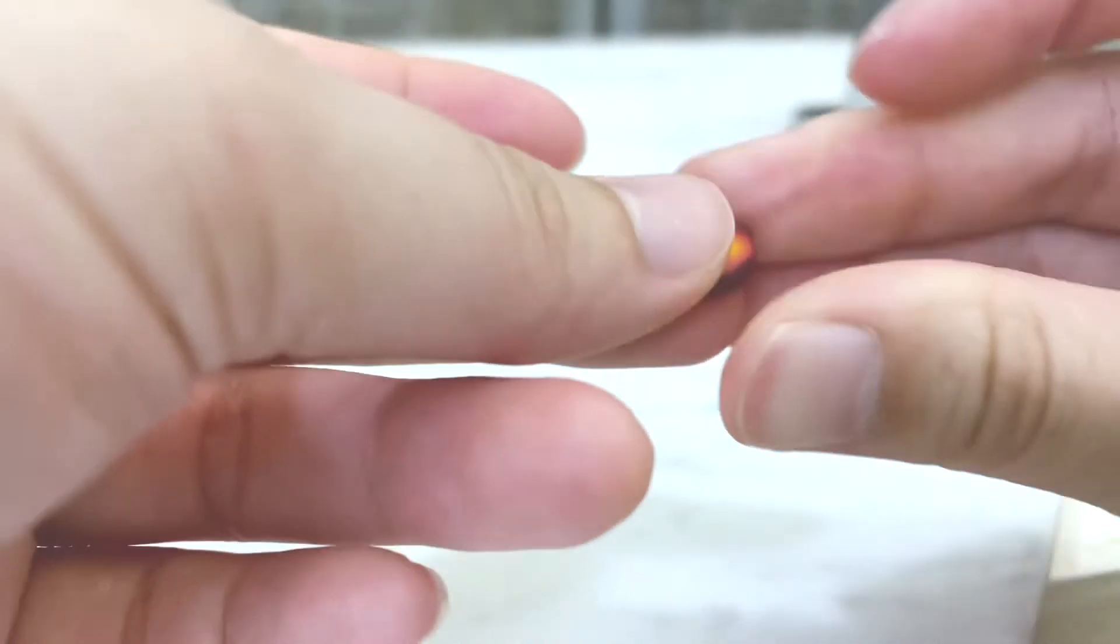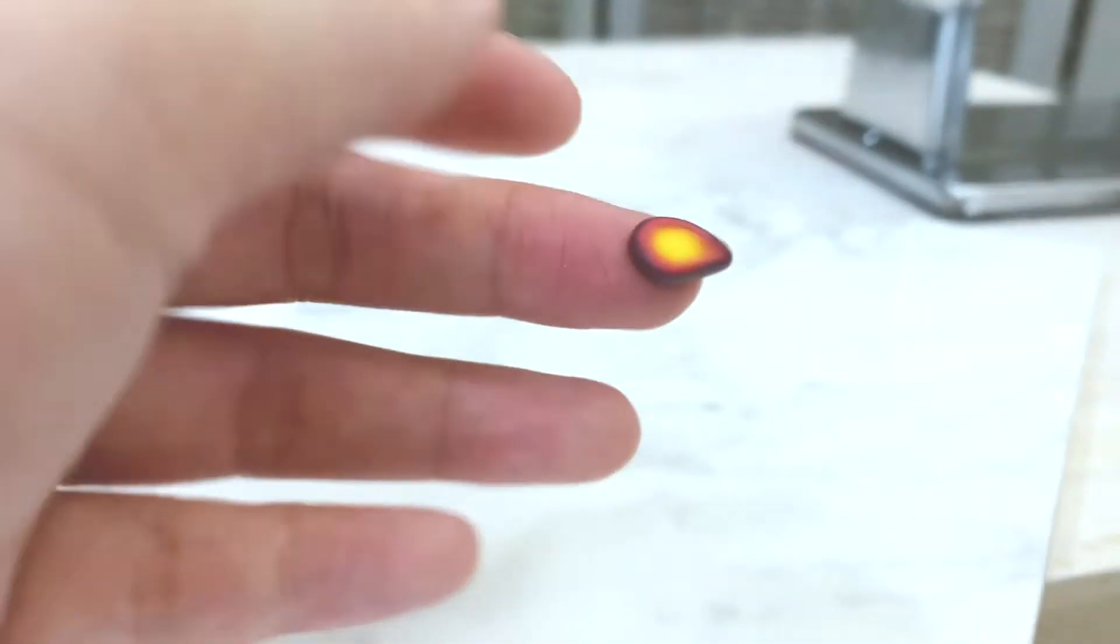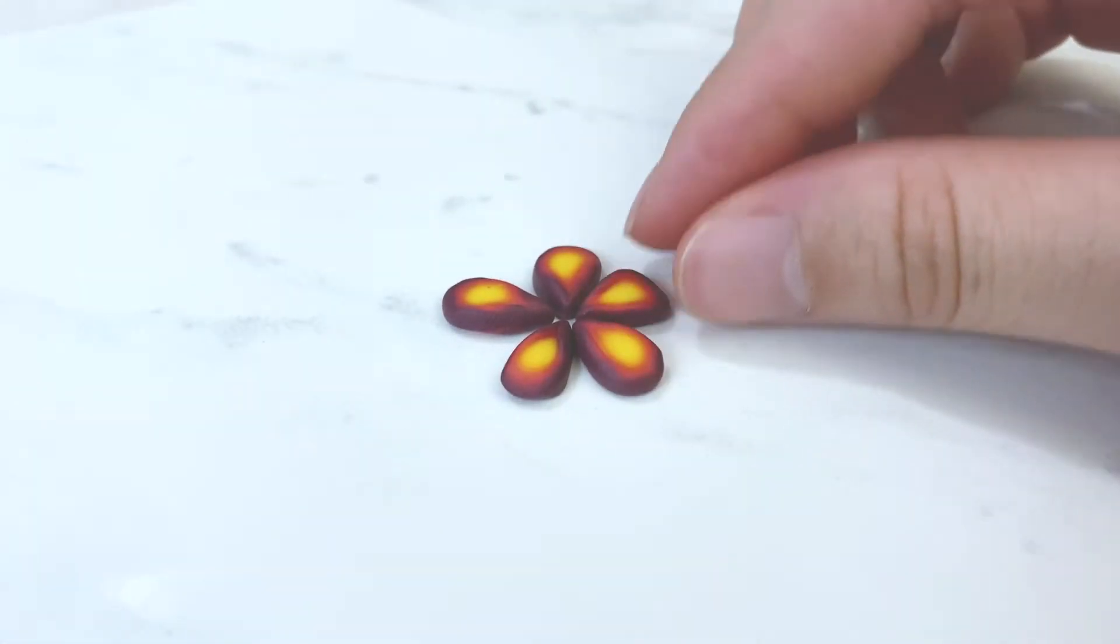For instance, you can morph the shape into a teardrop or petal then reduce the cane into several different sizes to create flowers or other types of patterns.